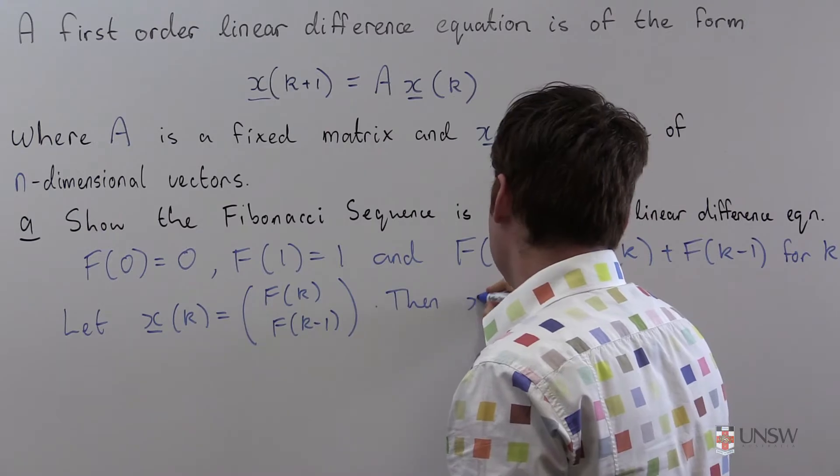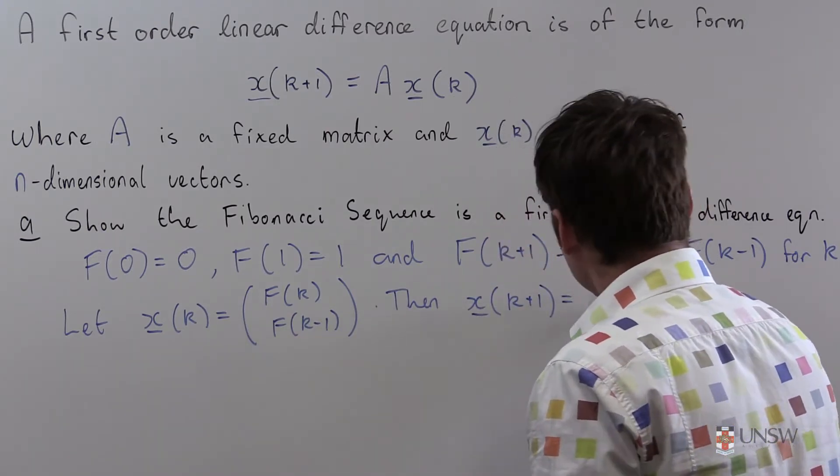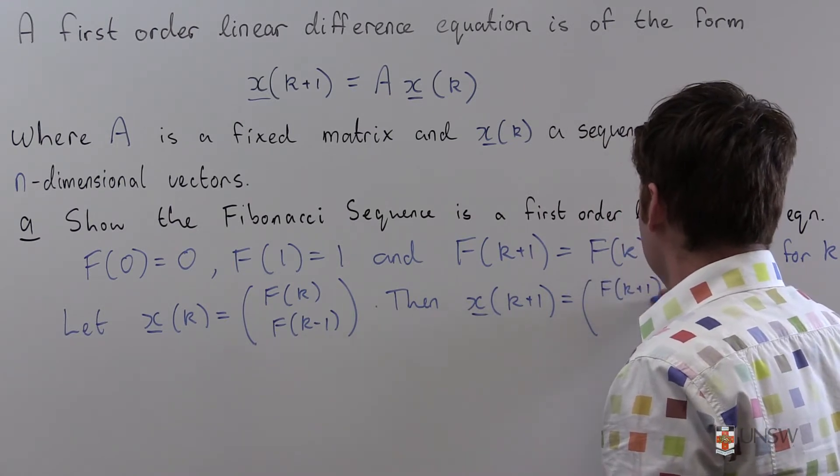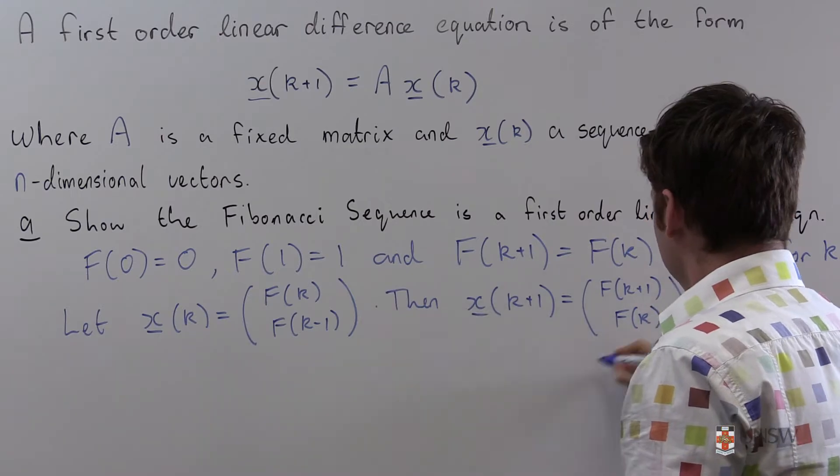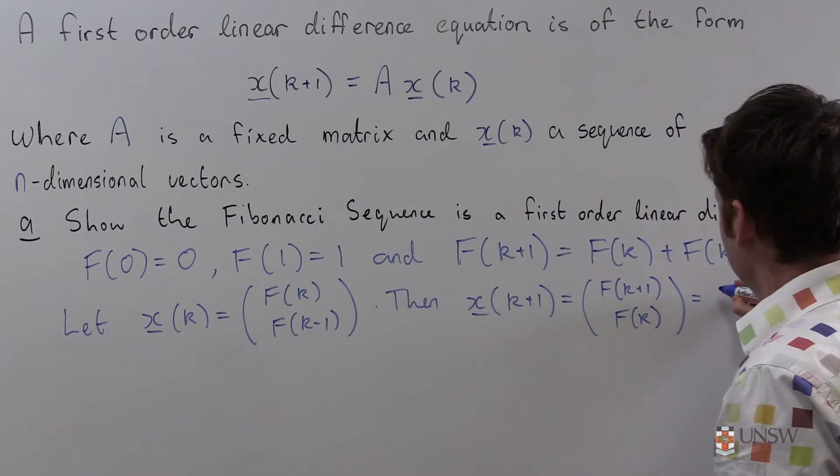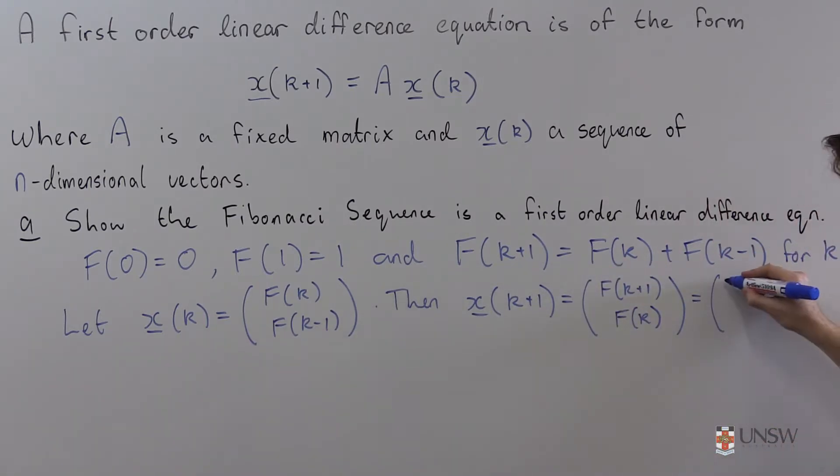Then x(k+1) is equal to f(k+1), f(k), which is equal to, well I can rewrite k+1 using this formula. That's equal to f(k) plus f(k-1), and down here I still have f(k).